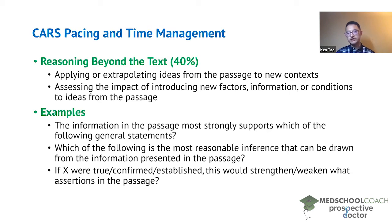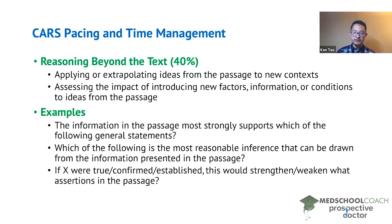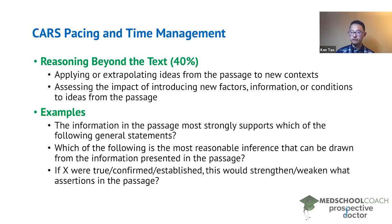That strengthen-or-weaken stem is extremely common on the MCAT CARS section — you see it all the time. The first half introduces some new information, and then asks how that would impact the passage, typically whether it would strengthen or weaken a particular claim. These are the different question types in the MCAT CARS section. Recognizing them allows you to identify which question types you're missing repeatedly, and to develop an effective approach to tackle each type.